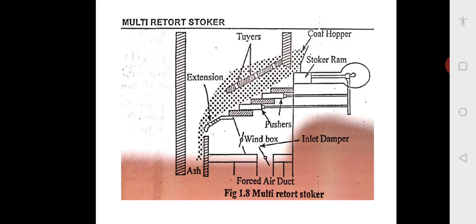This stoker also consists of a fuel hopper and a coal pusher as shown in the figure. The coal is fed through the hopper and pushed by the main pusher driven by a ram — coal comes from the top by gravity and is pushed by a ram, which is like a piston arrangement. The distributing pushers in the retorts push the coal and distribute it over all the retorts. The movement of the fuel bed by the pushers helps minimize clinker formation, as the coal is pushed so caking will not happen.